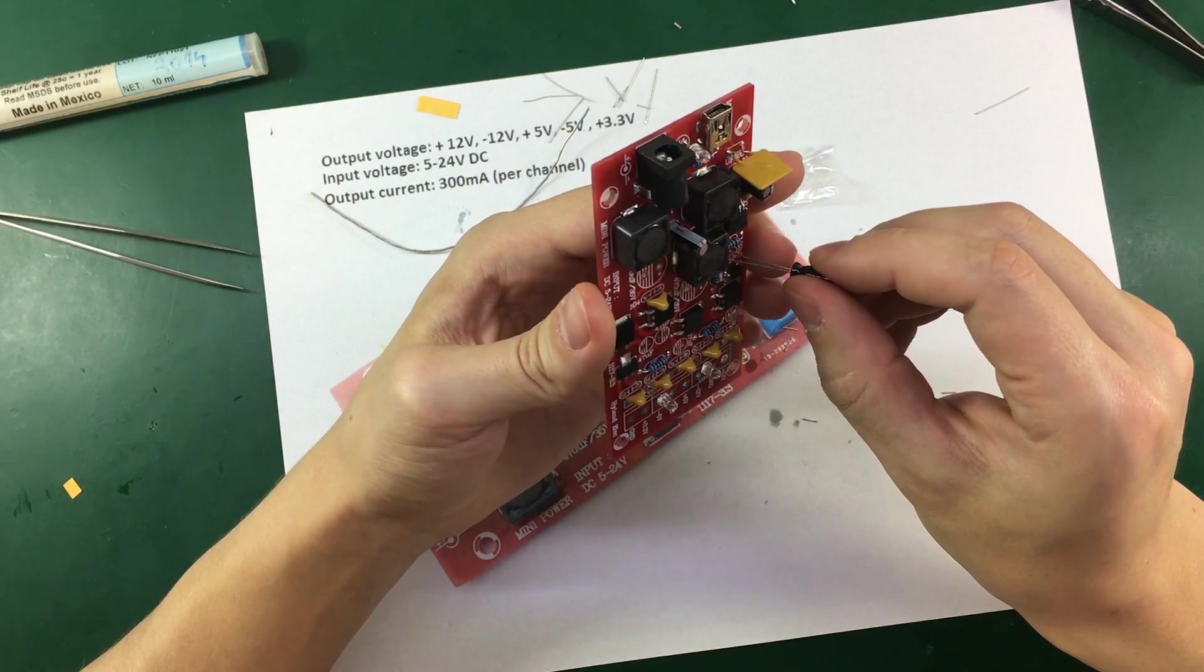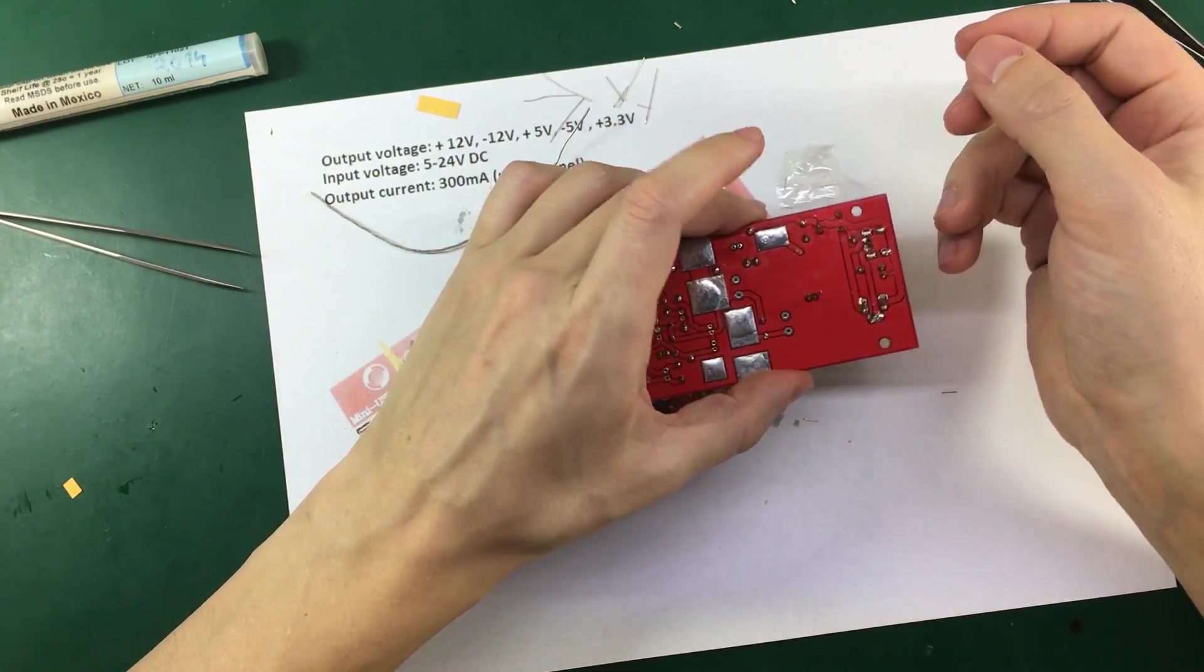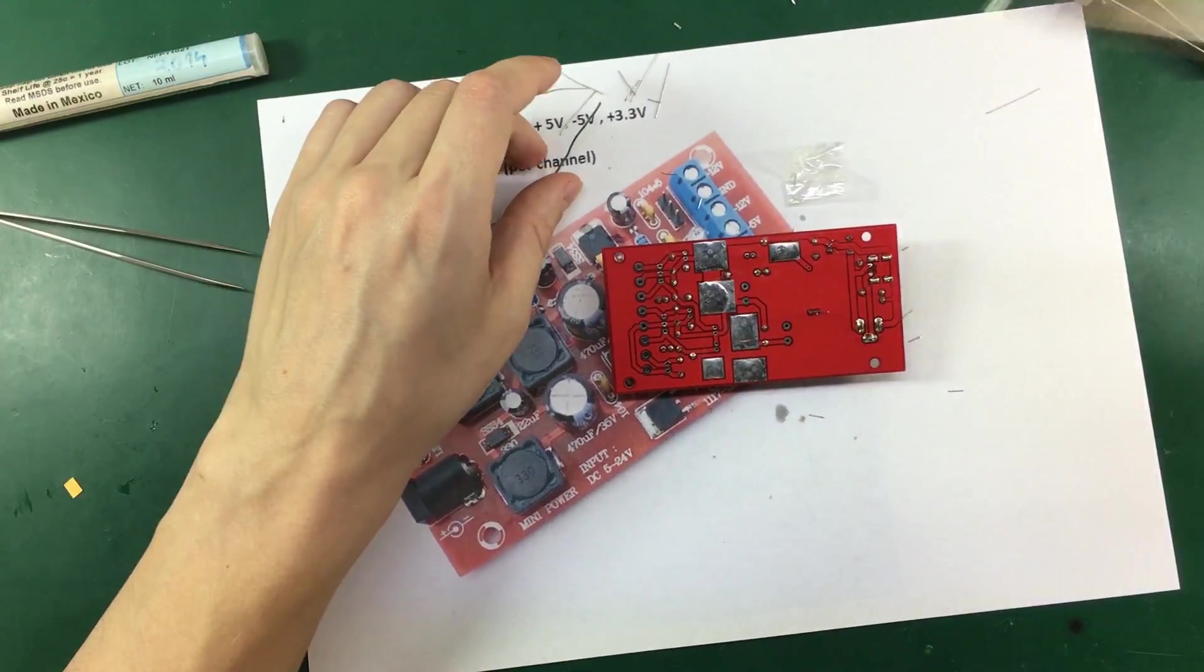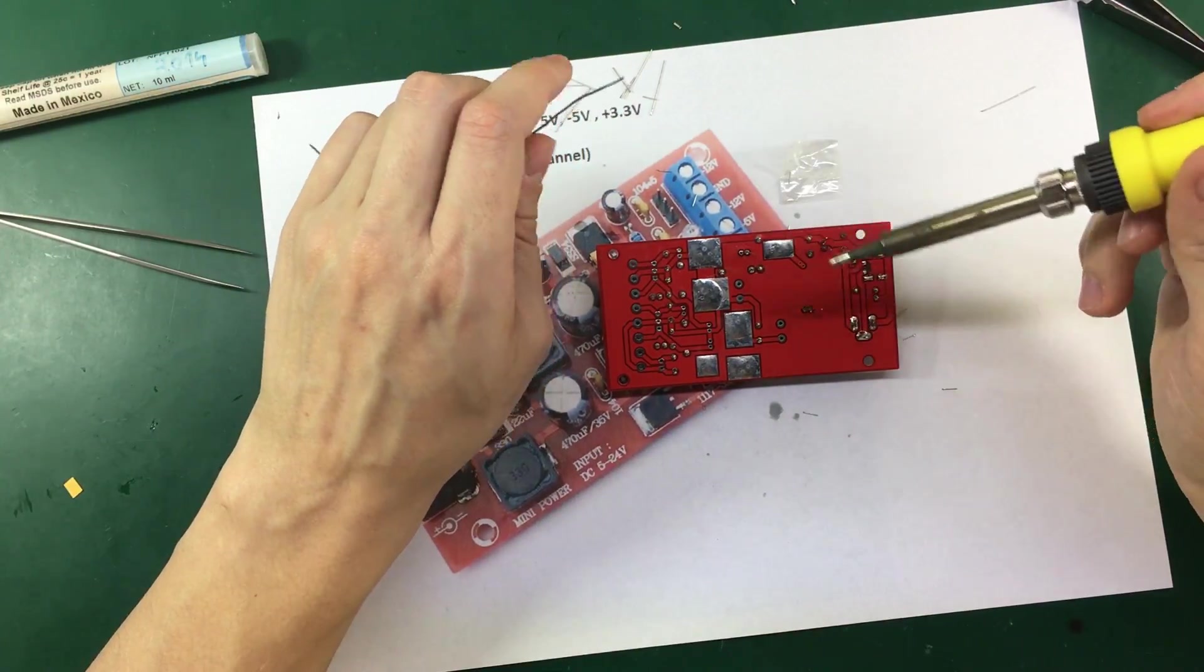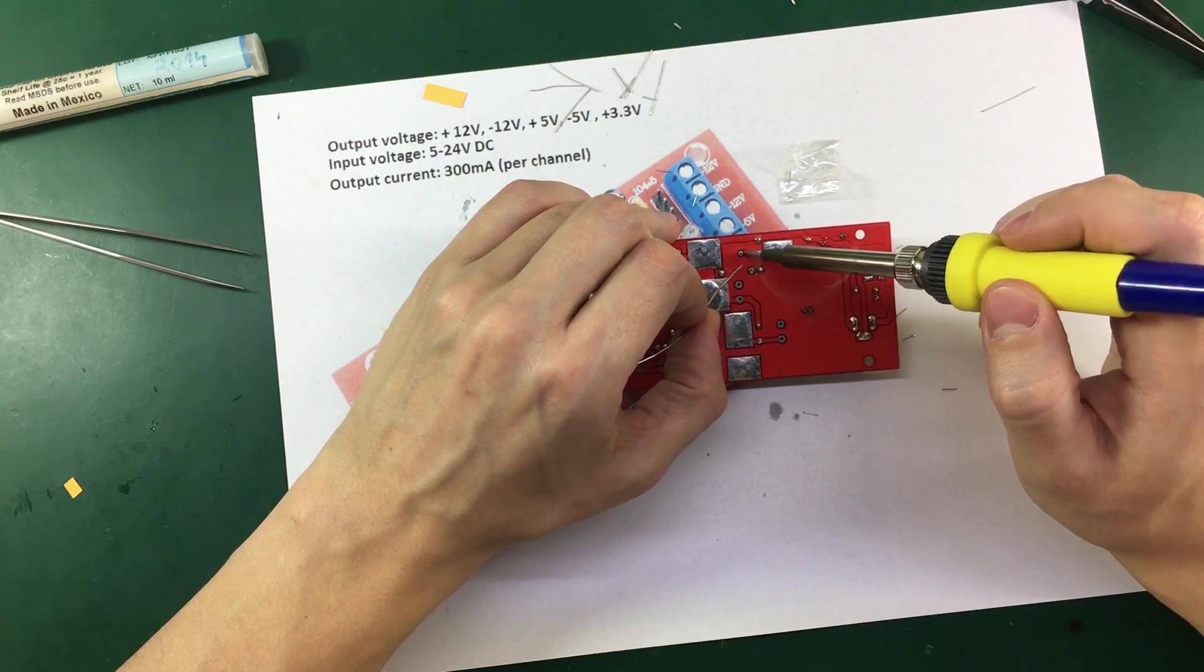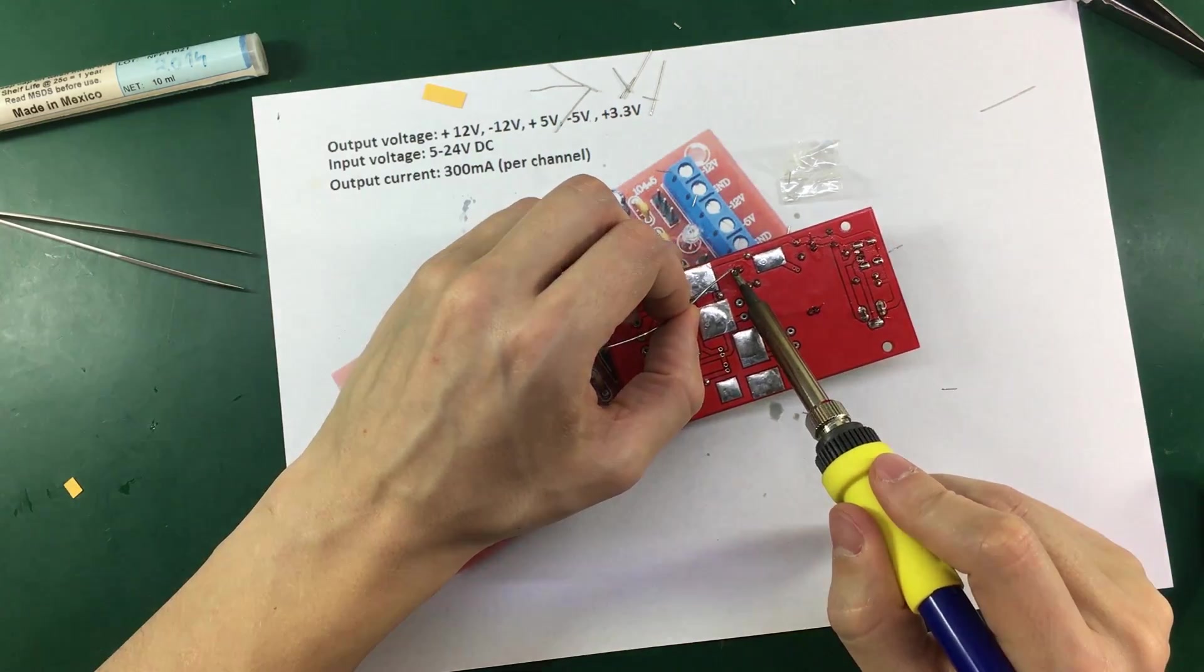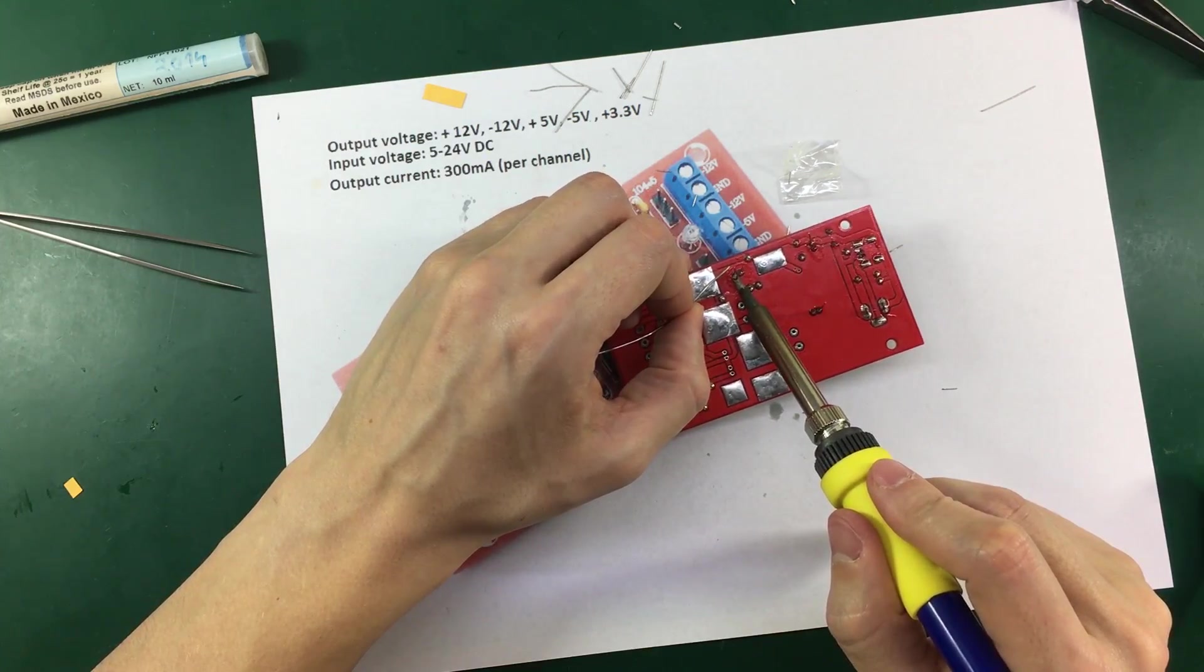So we have a bunch of these 22uF capacitors. These will be of course for filtering the output of the switching regulator. Or perhaps to provide a nice stable input at the linear regulators.